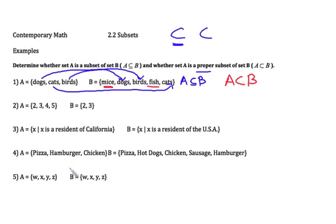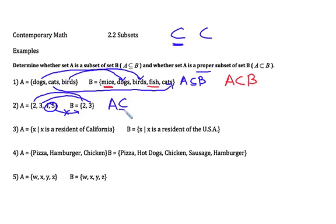In number 2, we have 2 and 3, but notice 4 and 5 are not in set B. Therefore A is not a subset of B. And if it's not a subset, then it cannot be a proper subset.